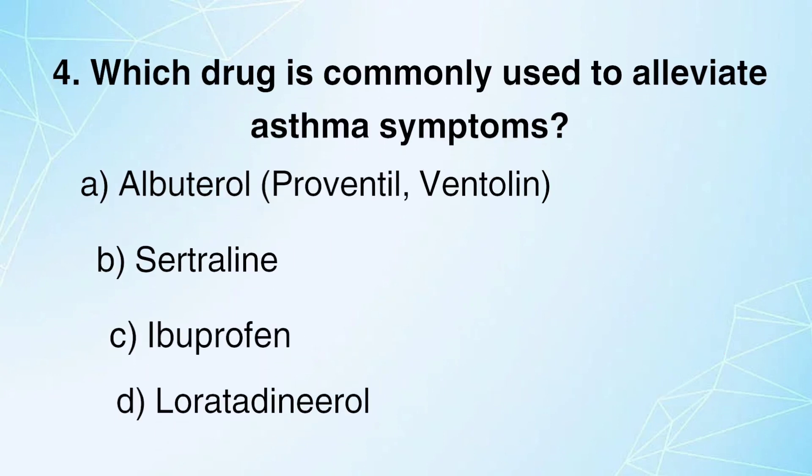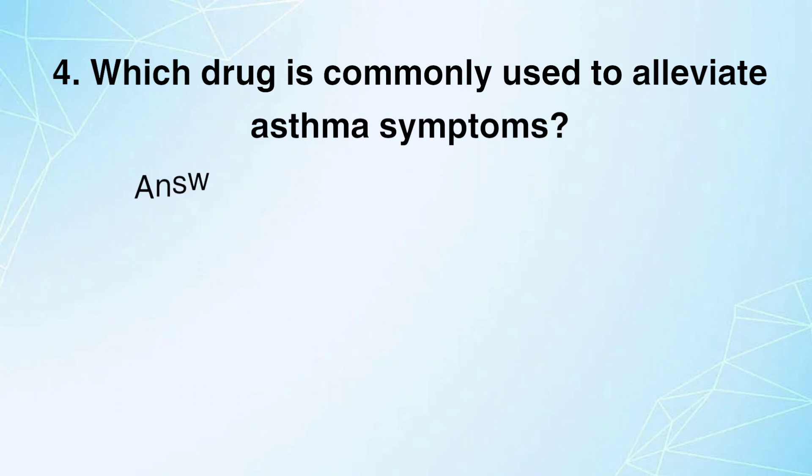Which drug is commonly used to alleviate asthma symptoms? A. Albuterol (Proventil, Ventolin). B. Sertraline. C. Ibuprofen. D. Loratadine. Answer: A.